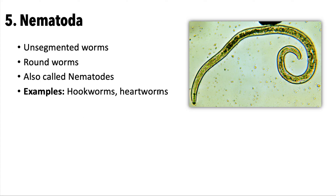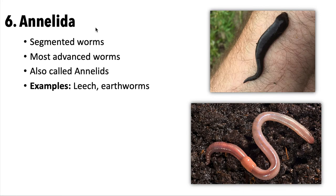Hookworms and heartworms will be examined in terms of how they infect pets and other animals — they're rather gross. The last group of worms is Annelida, or annelids — segmented worms and the most advanced of the three worm groups. Examples include leeches and earthworms. A leech doesn't obviously show its segments, but if you look closely you can see little ridges. All three worm groups will be covered in one unit together.